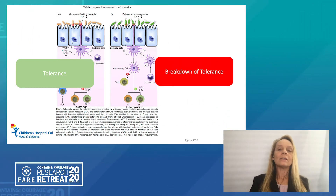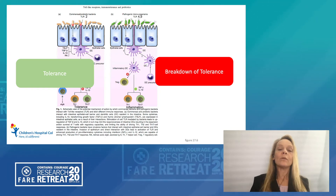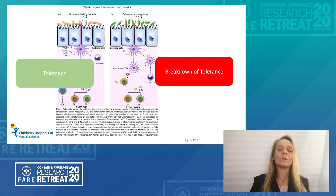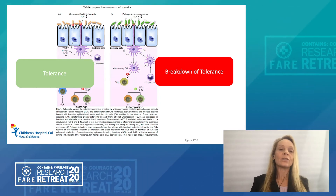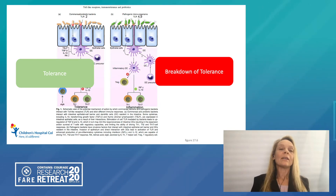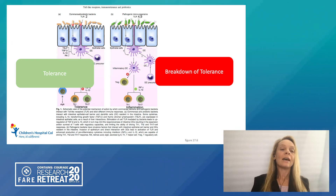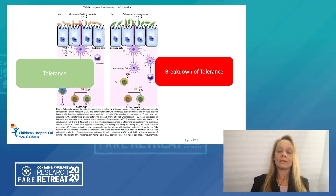As you can see on the slide, when we have a dysbiotic gut, we get some breakdown of tolerance, we see less presence of regulatory cells, and we see overrepresentation of Th1 and Th17 cells leading to inflammation. On the left-hand side of the slide, you can see that when there is good balance between the commensal bacteria, we see upregulation of T-regulatory cells and cytokines such as TGF-beta and IL-10, which is associated with tolerance development.